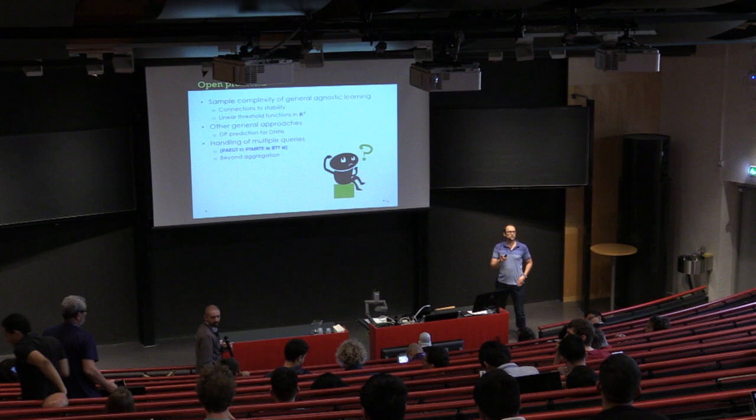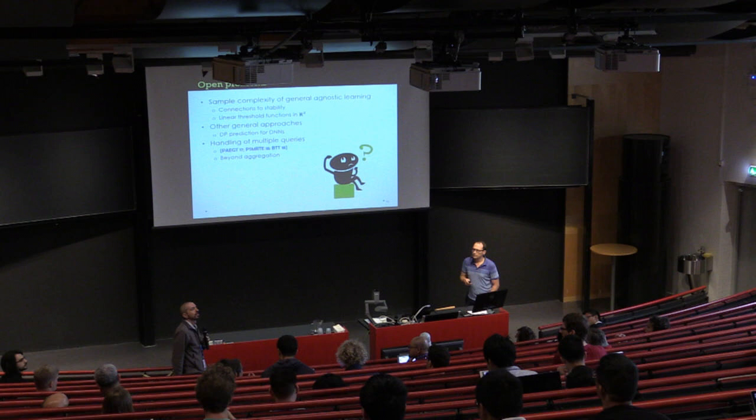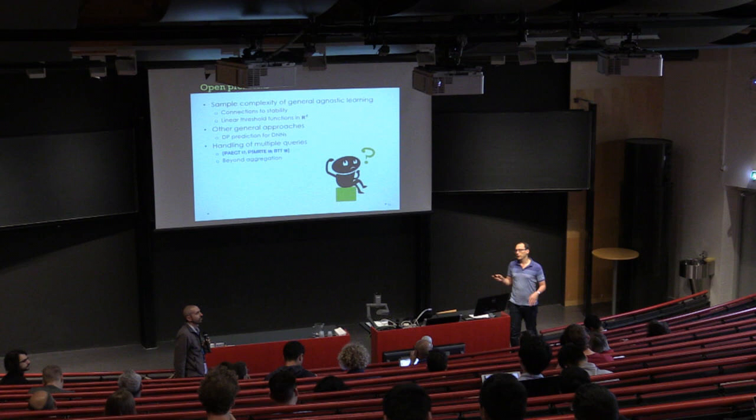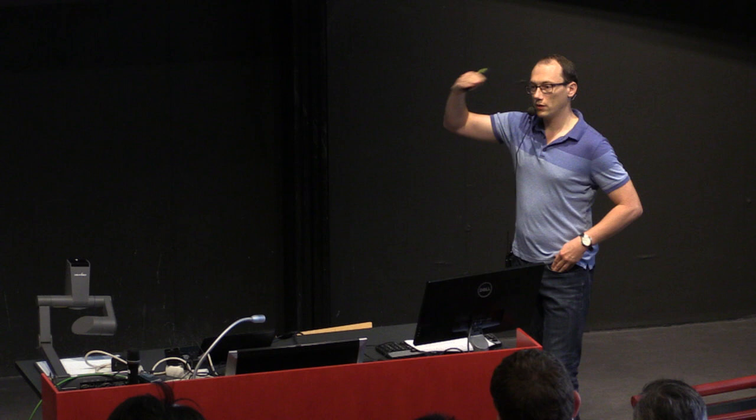Question: Do you investigate the case of approximate prediction? Answer: For the lower bound, it applies also for epsilon-delta. I wasn't able to see any case where approximate differential privacy improves anything for these models. Although in the setting of multiple queries, you would almost necessarily switch to approximate differential privacy because there you need to use composition properties.